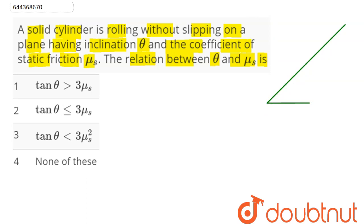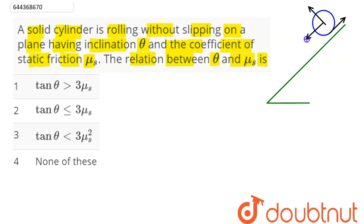A solid cylinder is rolling down this inclined plane and the static coefficient of friction is given as mu s. When it rolls down, friction acts upward, normal acts perpendicular to the inclined plane, and down the incline there is mg sine theta, while mg cos theta acts perpendicular.